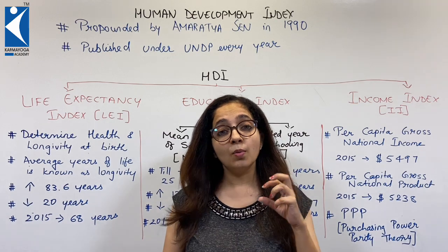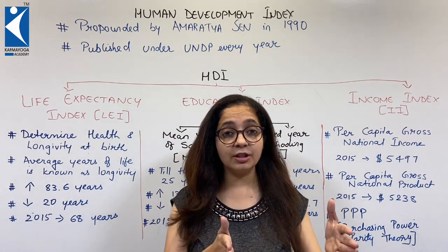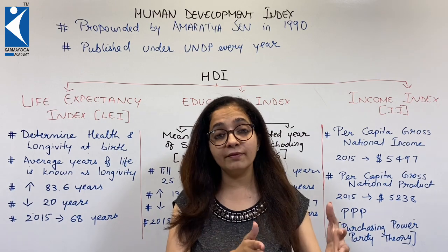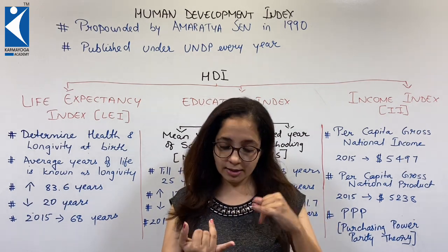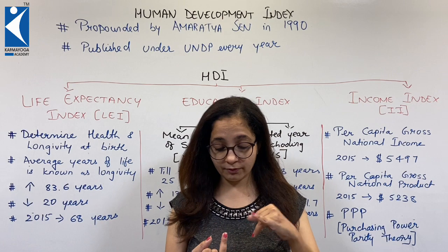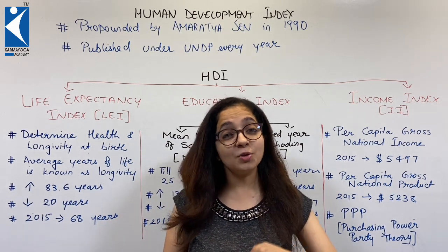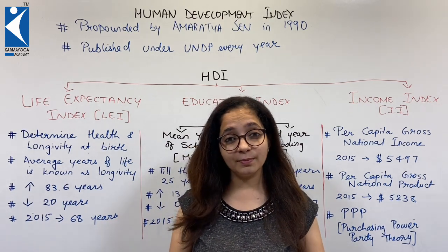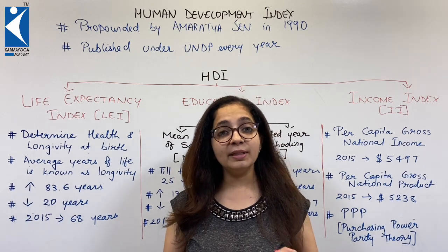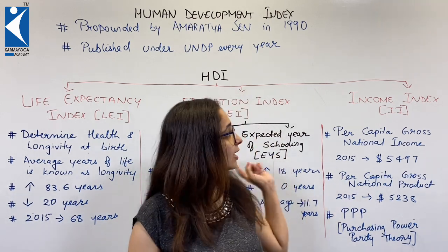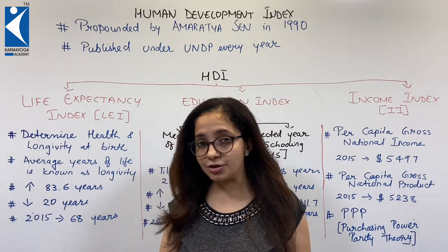So what is HDI? How can we get to know the level of human development in each country? A country develops, infrastructure develops — that's good. But does the human develop? How will we know that? What will be the criteria? There are three criteria set, and we will learn each of them.